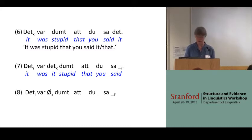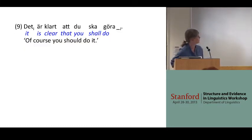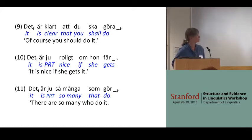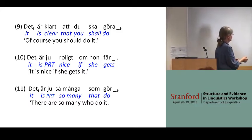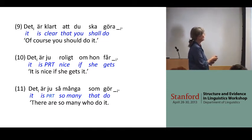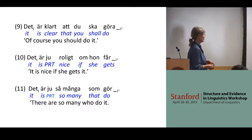I first started noticing these in the 1990s in informal speech, radio broadcasts. And here are a few more examples: 'Det är klart att du ska göra,' 'Det är ju roligt om hon får,' 'Det är ju så många som gör.' So what they have in common is that they start off with 'det' followed by either a modal auxiliary or an evaluative adjective, and then a finite clause with an object gap. And the finite clause can be a that-clause, an if-clause, or a relative clause.